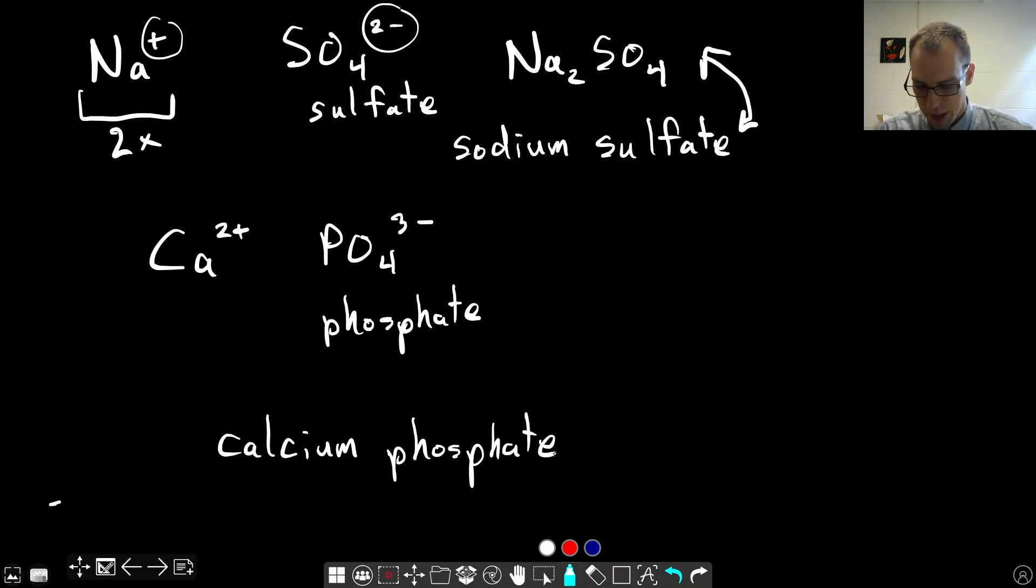Just the name of the cation, name of the anion. Calcium always has the same charge, so we don't need Roman numerals. But we need to figure out how to get this to be electrically neutral. We have a plus two charge and a minus three charge, which don't add up to zero. If we have two phosphate ions, we have a negative six charge. We would need three calcium ions to give positive six for it to all balance out.